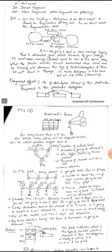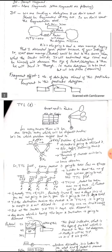The fragmentation offset field is used to number the fragments of a datagram. It indicates the number of data bytes that precede a particular fragment within the original datagram, so that the destination can identify each fragment's position. The fragmentation offset concept will be covered in detail once all the header fields are reviewed.